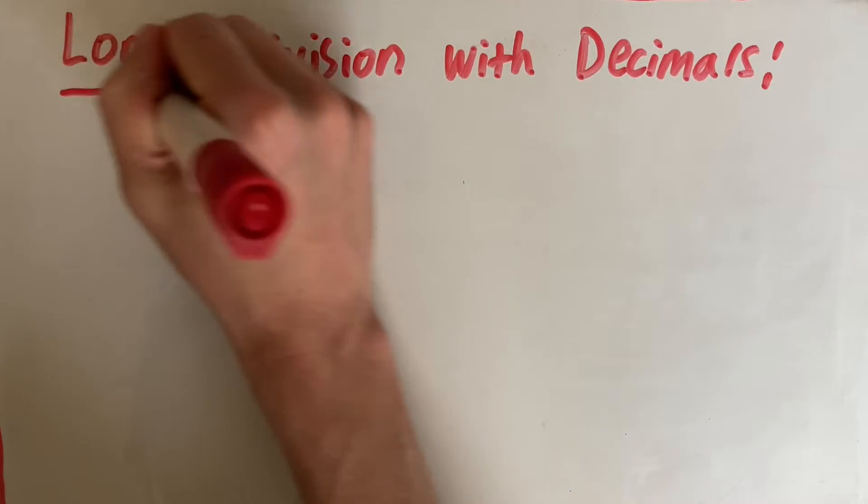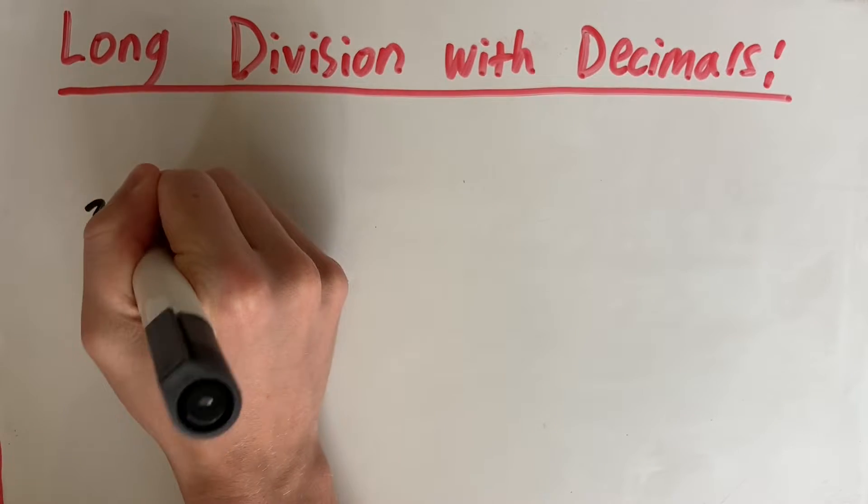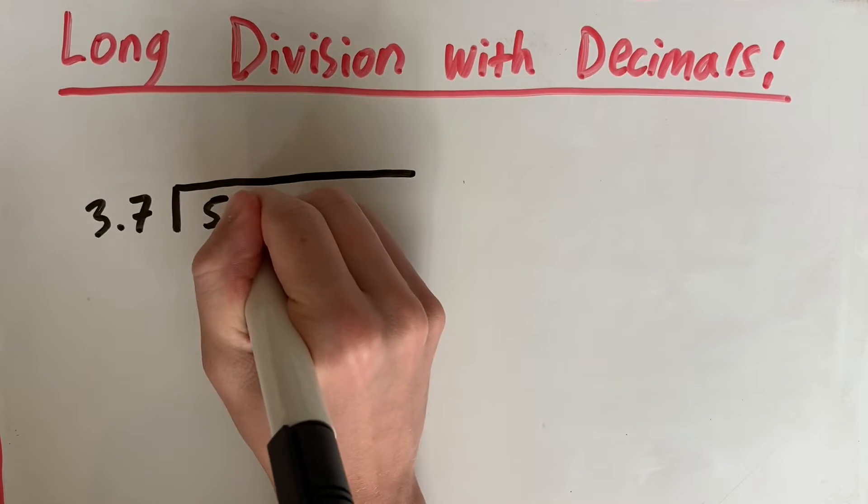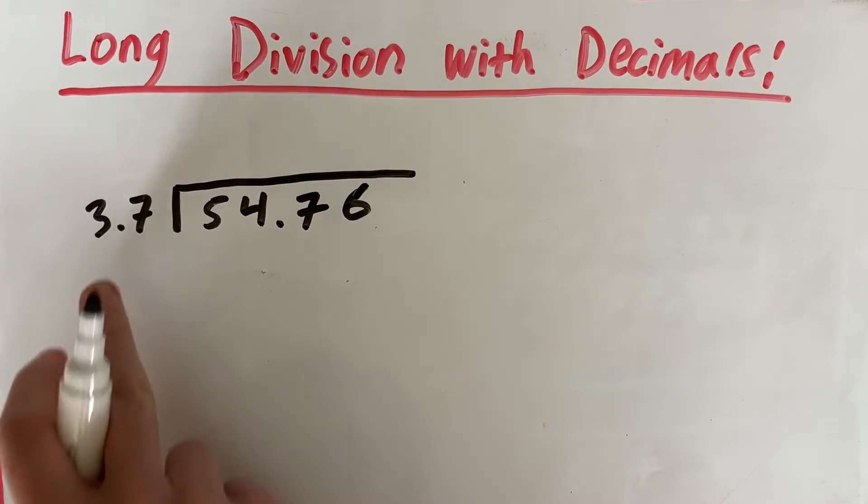Hello and welcome. In this video, I'm going to show you how to do long division when you're dealing with decimals. So let's say we have the problem 3.7 divided by 54.76.